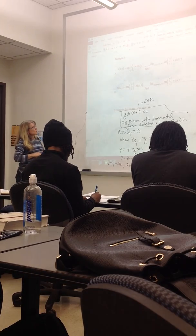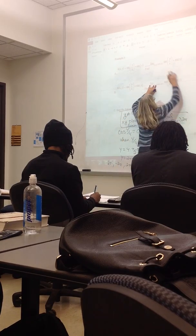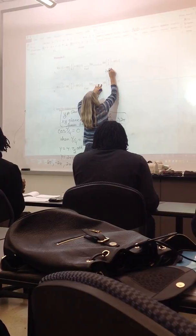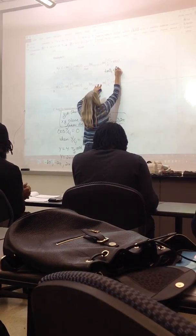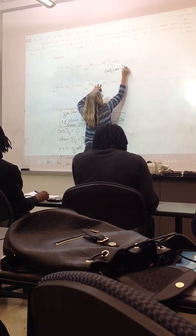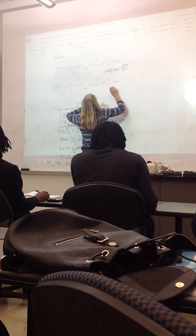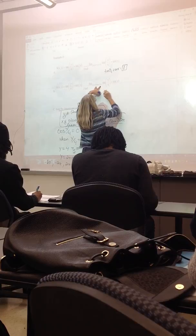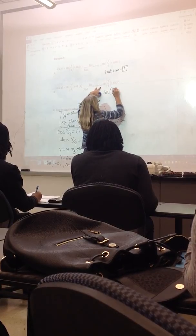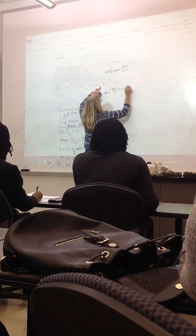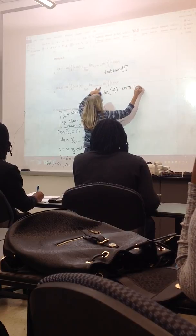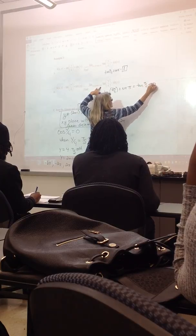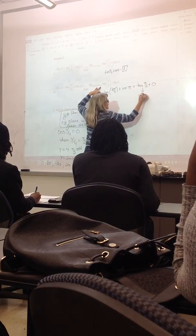And for the first limit, if I try to plug pi in, I just get tangent of pi over 4 plus sine of pi, which would be 1 plus 0. And then the next one is pi, 2 pi, so tangent of 2 pi over 4 plus sine of pi is going to equal tangent of pi over 2 plus 0, but this is undefined.